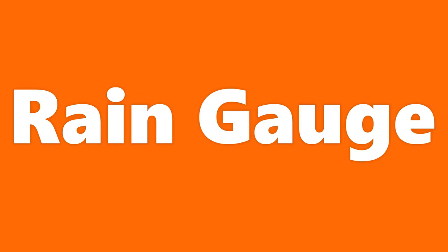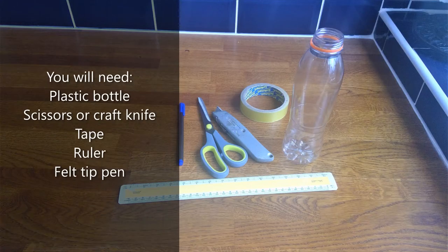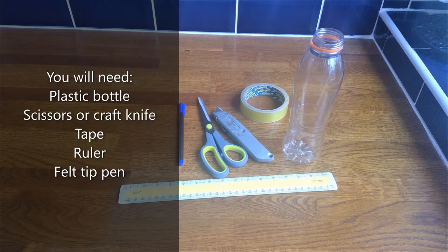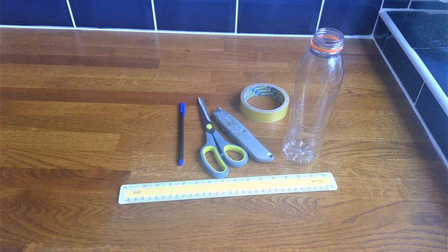I'm going to start by making a rain gauge. To do this you'll need a plastic bottle, some scissors or a craft knife, some tape, a ruler, and a felt tip pen.